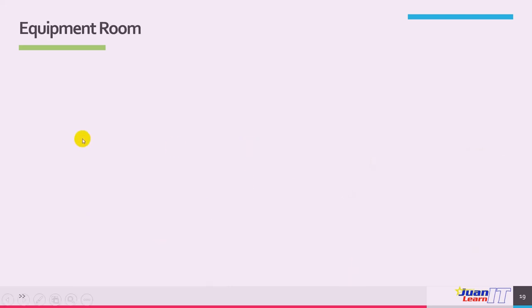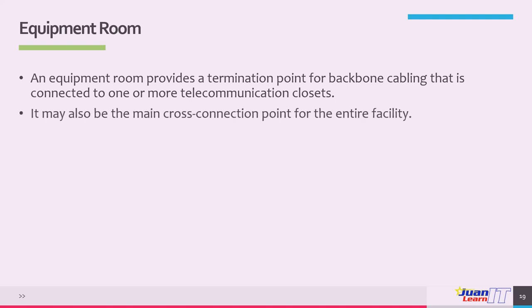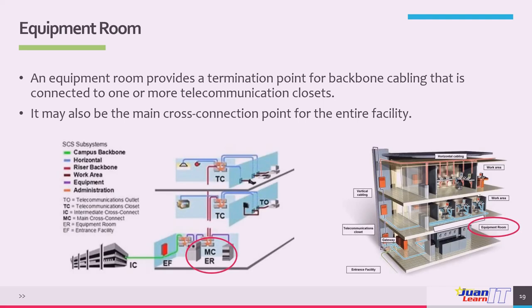The equipment room provides a termination point for backbone cabling connected to one or more telecommunication closets, and may also be the main cross-connection point for the entire facility. In a campus environment, each building may have its own equipment room to which telecommunication closet equipment is connected, and equipment in this room may then connect to a central campus facility providing the main cross-connect for the entire campus.